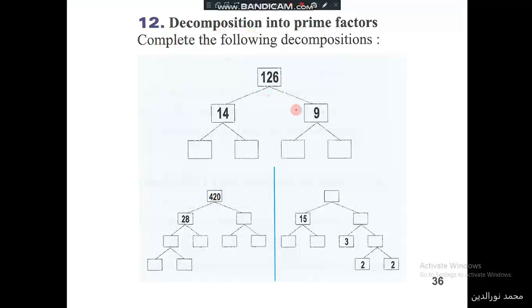In this case, we have the tree method decomposition of the number. Let's start. What are the numbers that are multiplied together and give 9? It's 3 times 3.